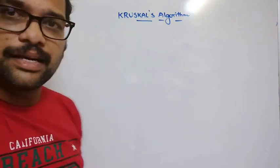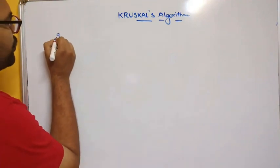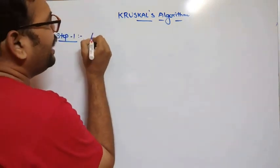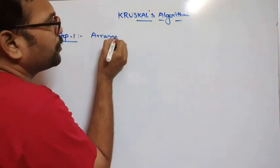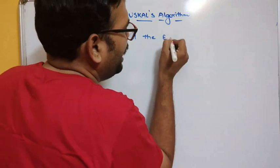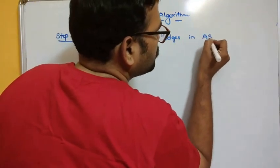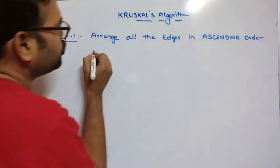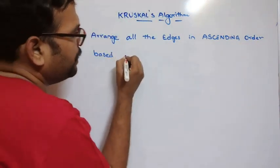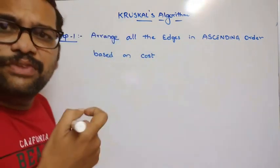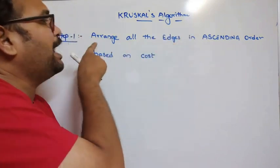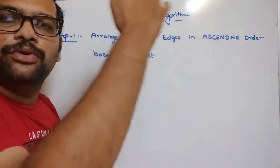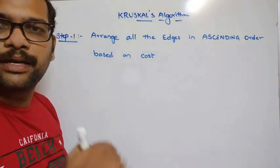Now we'll see Kruskal's algorithm. The first step is to arrange all the edges in ascending order based on cost. Every edge will have its own cost, so we need to first arrange all the edges in ascending order — from lower value to higher value — because we need to find the minimum cost spanning tree.